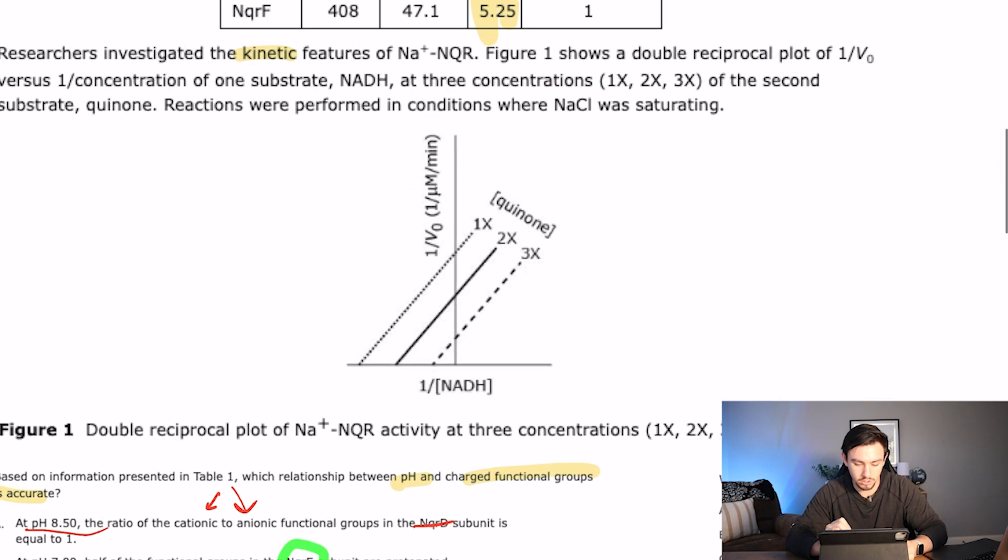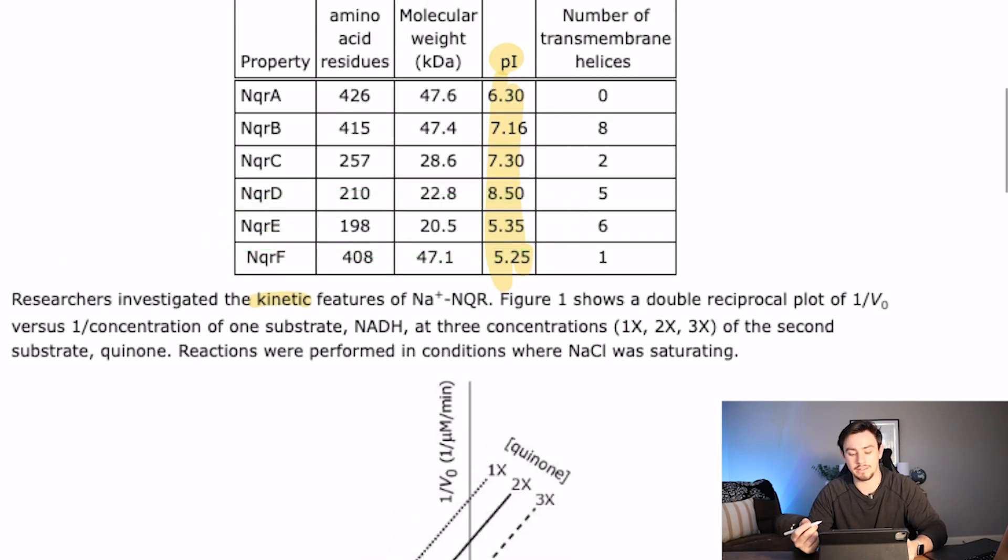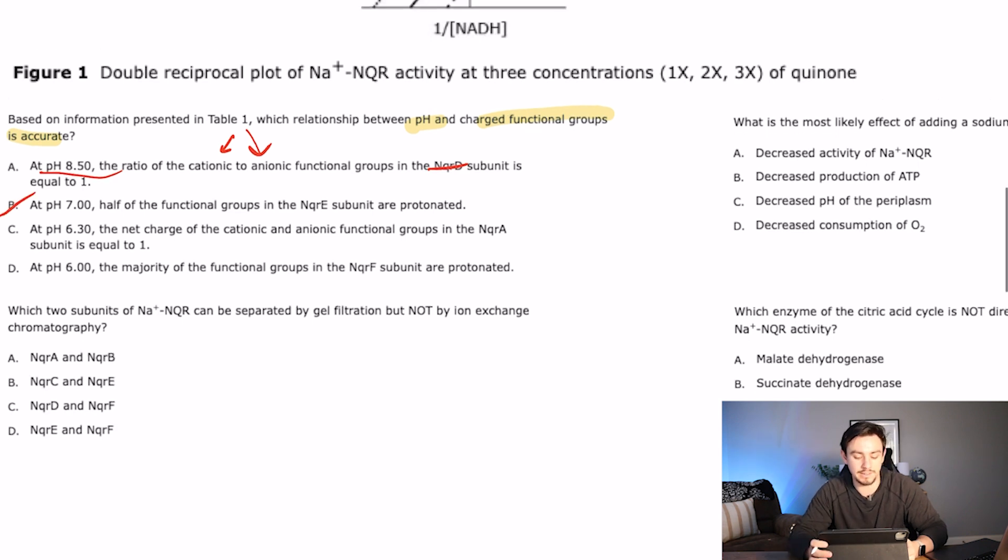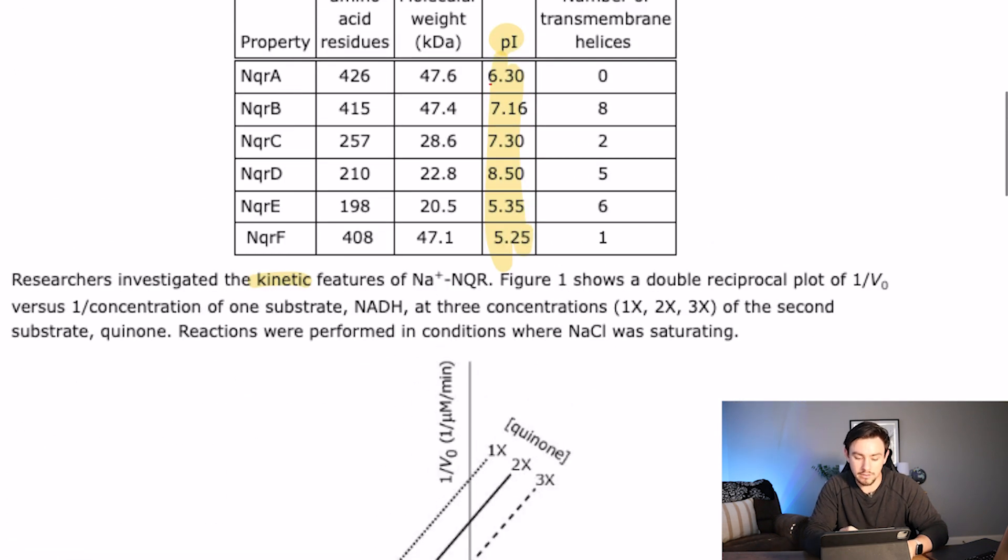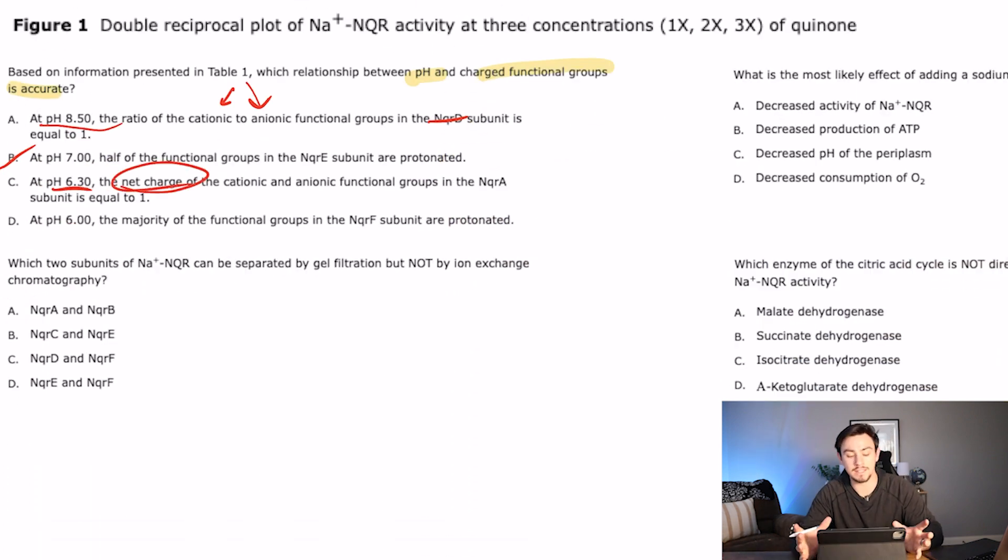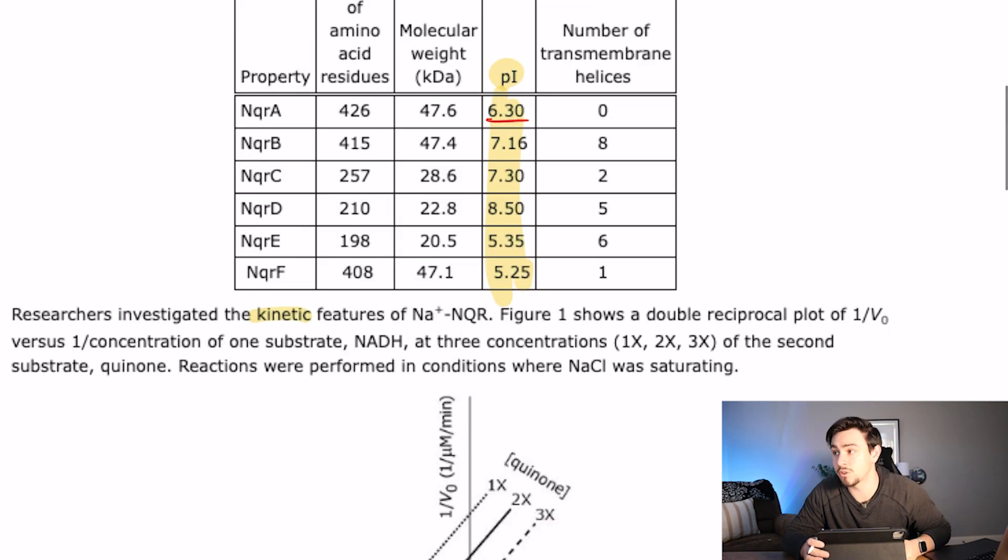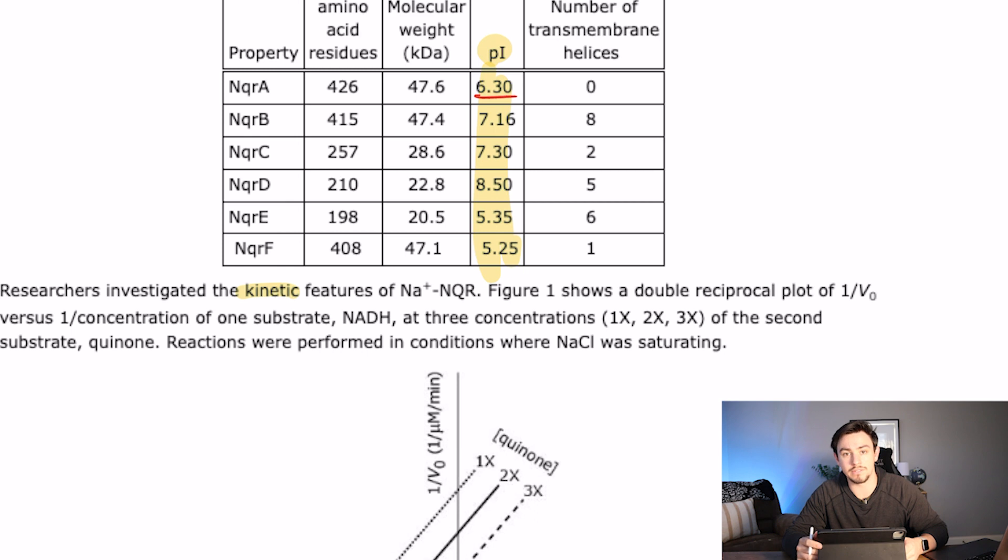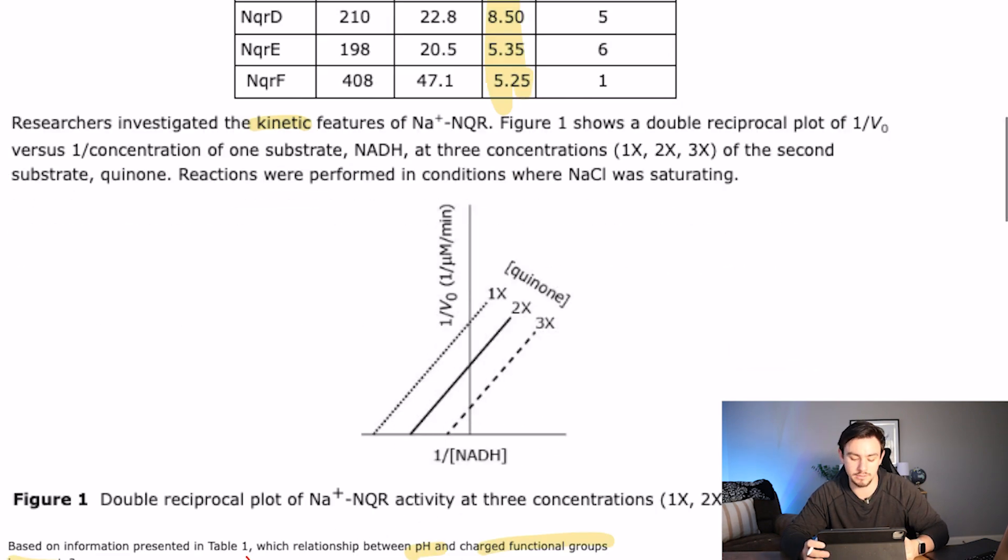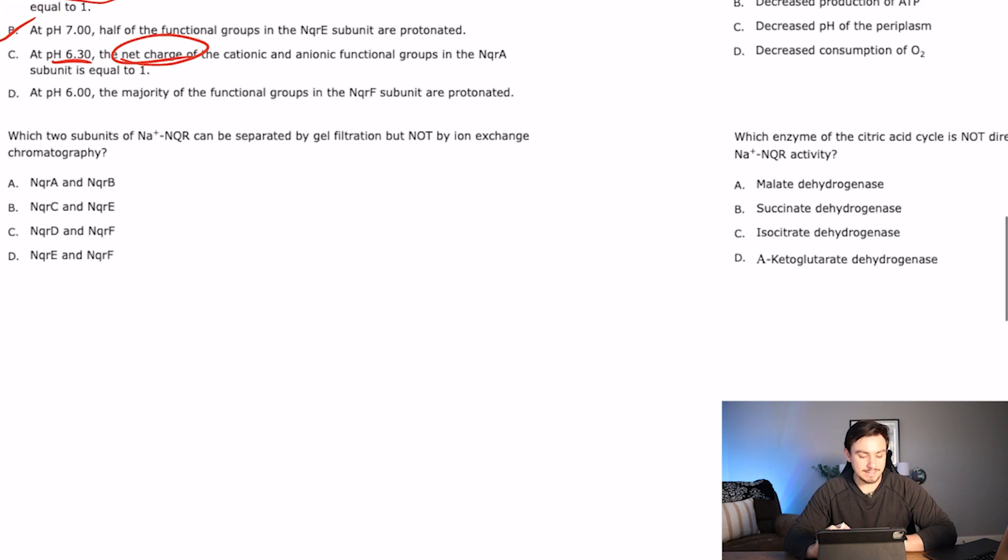B says at pH 7, half of the functional groups for E. So actually for this one, because the PI is 5.3, then this means we're going over the PI. So we would actually have more than 50% deprotonated. So maybe not B. And you can go on through this list and you can knock out the rest of them. pH 6.3, the net charge of NQRA is equal to one. If you go to NQRA, you have 6.3. And it's asking about the net charge here. So you might can get a good picture of the relative functional groups, but not necessarily the net charge because you don't know the charges as a whole for what we're working with. You could have 10 molecules that are positively charged, but their PI is like 7.1. And then you could have one molecule that's negatively charged whose PI is like 1. And it would bring the total PI of the molecule down to somewhere between 1 and 7.